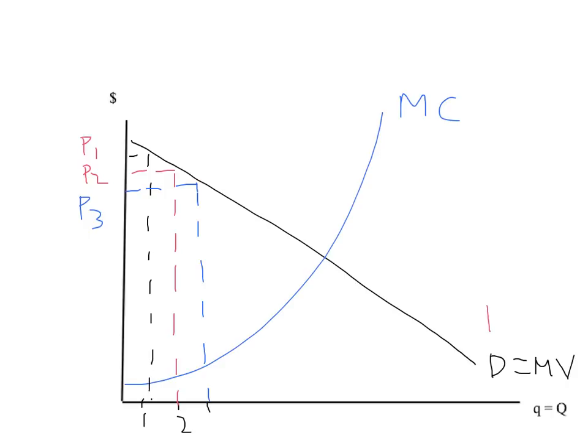In other words, in this particular example of perfect price discrimination where the monopoly is a mind reader, the demand curve is the marginal revenue curve.